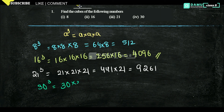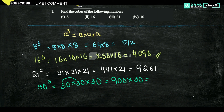So 21³ = 9261. Our last one is 30 cube, so 30 into 30 into 30. 30 into 30 is 900, and 900 into 30 gives you 27,000.